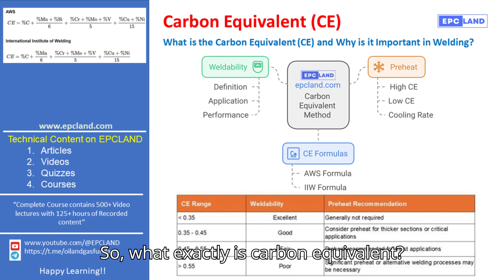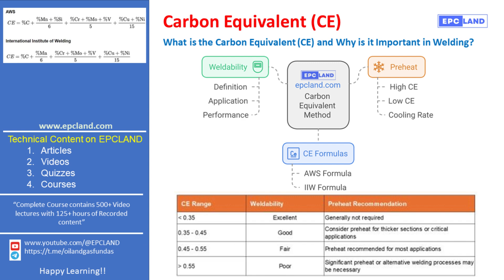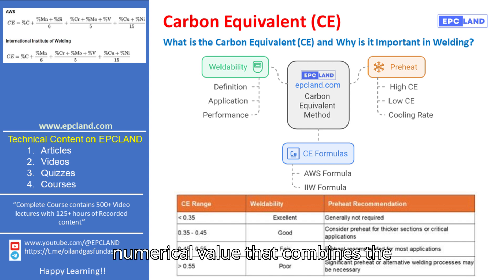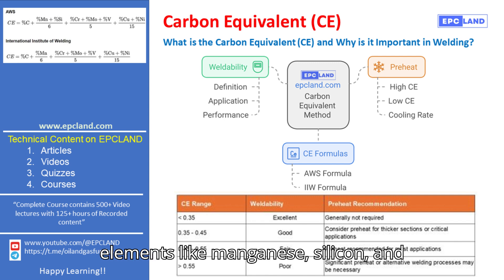So, what exactly is carbon equivalent? Simply put, carbon equivalent, or CE, is a numerical value that combines the influence of carbon and other alloying elements like manganese, silicon, and chromium on a steel's weldability.